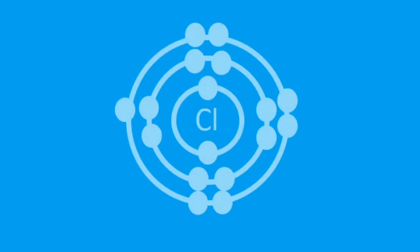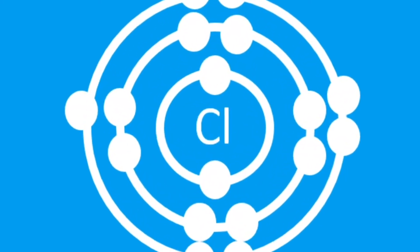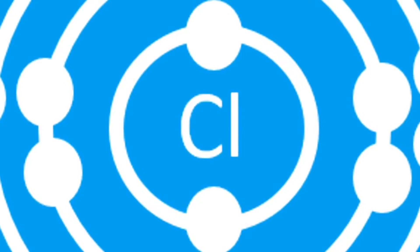So to have a look at a covalent bond, let's take an example of chlorine, a chlorine molecule. Now chlorine is in Group 7 and has the electron configuration 2,8,7. If we were to zoom in to the center of a chlorine atom...